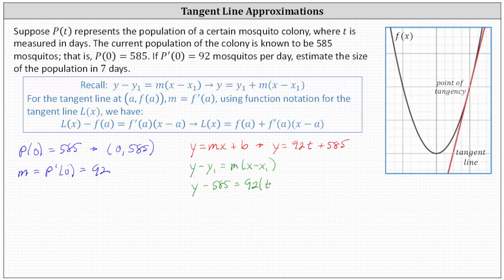equals 92 for m, and then instead of x, we use t minus zero. And as we solve for y, we get the same result of y equals 92t plus 585.